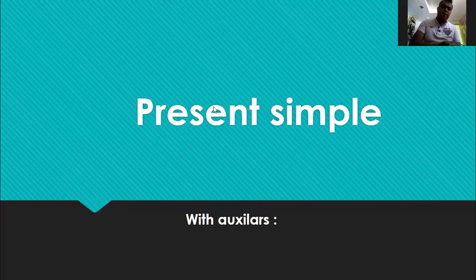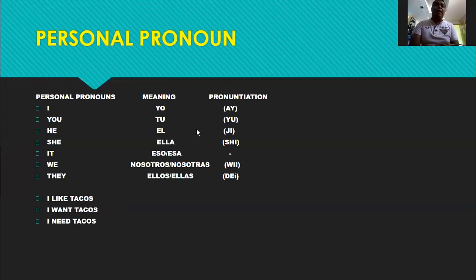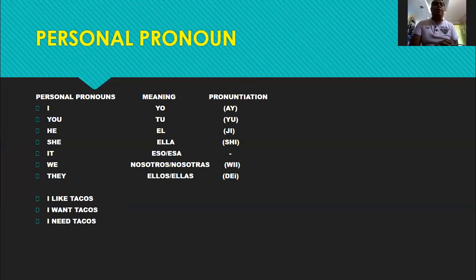Okay, so we saw the present simple with the auxiliary doing that — that's what we saw yesterday. We have the personal pronouns: I, you, she, it, we, they. I — yo; you — tú; he — él; she — ella; it — eso/esa; we — nosotros/nosotras; and they — ellos/ellas. Okay, that's the personal pronouns.